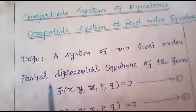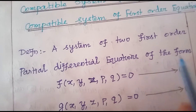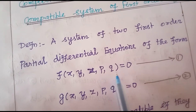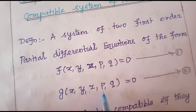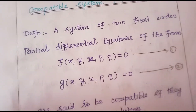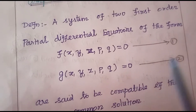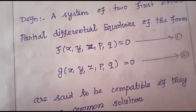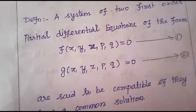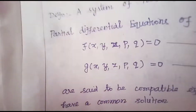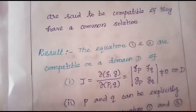The definition: a system of two first order partial differential equations of the form f(x, y, z, p, q) = 0 and g(x, y, z, p, q) = 0. Equations 1 and 2 are said to be compatible if they have a common solution. The two compatible equations share a common solution; otherwise we follow two results.